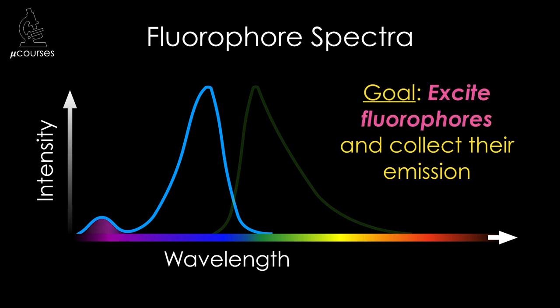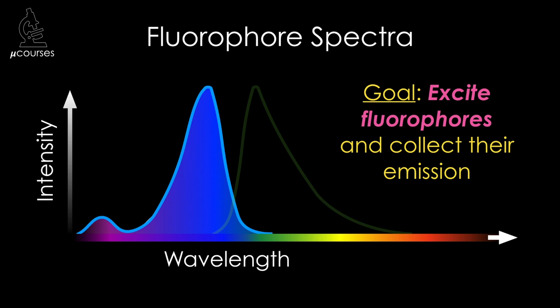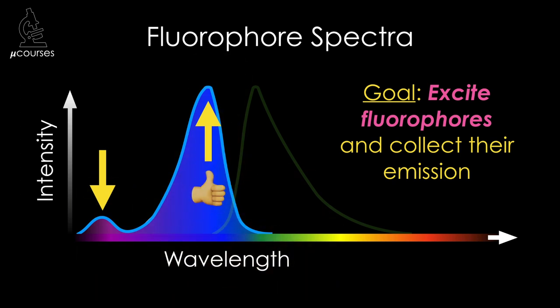Fluorophores absorb different wavelengths of light to varying degrees. On a fluorescent spectra, the height of the curve represents the amount of that wavelength of light that we can expect the fluorophore to absorb. I like to think of this as a probability curve. In this example, we can see that the fluorophore can absorb violet photons, but it has a much higher probability of absorbing blue photons. To efficiently excite the fluorophore, we want to illuminate it with the wavelengths of light at the peak.